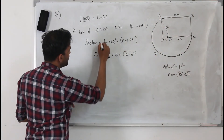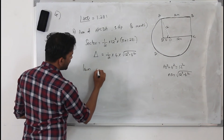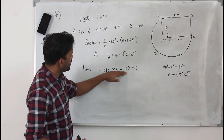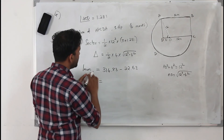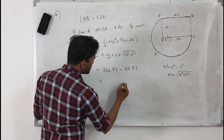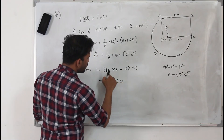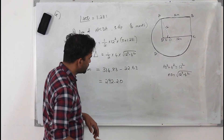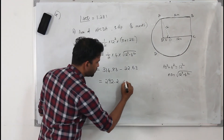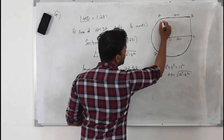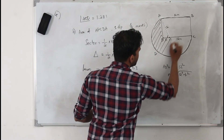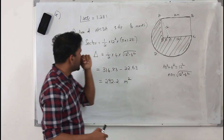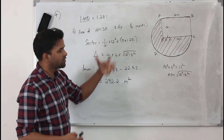The area of the lawn equals the sector area minus the triangle area. You find both values and subtract them to get the area of the lawn APCDA. When you do this calculation and round to one decimal place, the answer is 292.2 meter squared. That is the area of the shaded lawn of this given house.